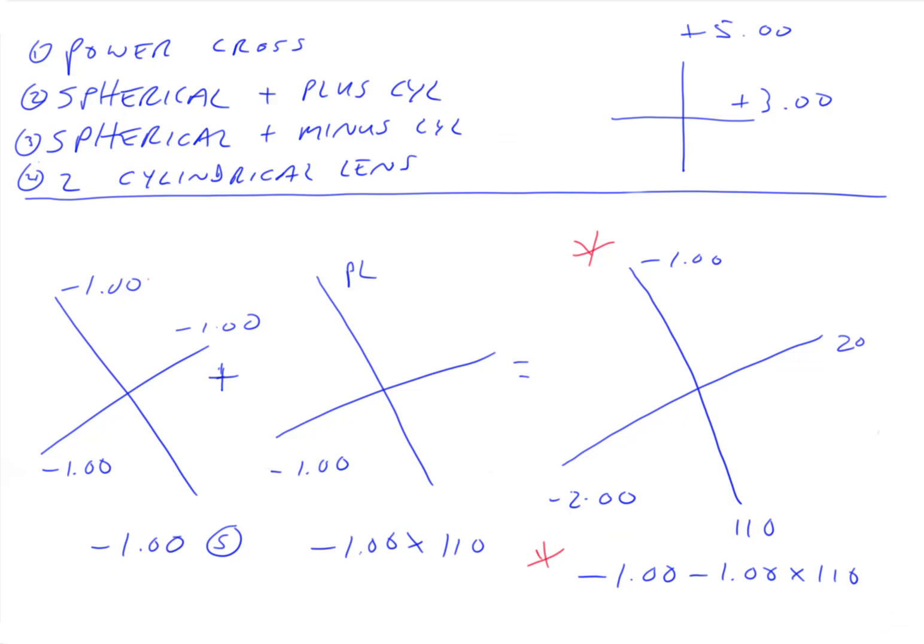Okay, and that's how you build a toric system using a spherical and a minus cylindrical lens. Next time we're going to do the same exercise using just two cylindrical lenses and no spherical lenses. Thanks.